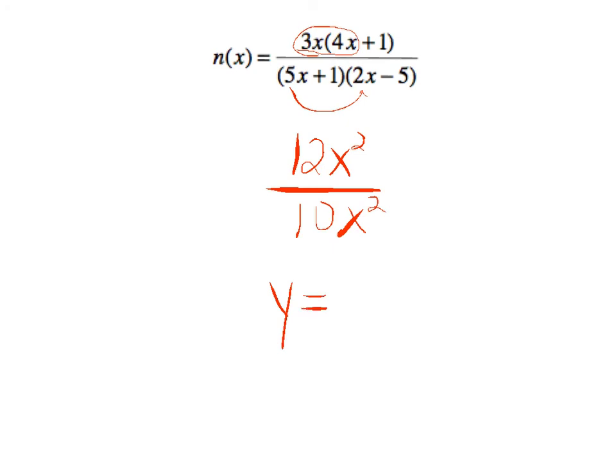So we're simply going to divide the lead coefficient on top by the lead coefficient on bottom, telling us that the horizontal asymptote is going to be at y equals 12 tenths, or six-fifths. That's our horizontal asymptote for n of x.